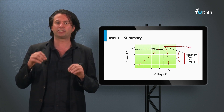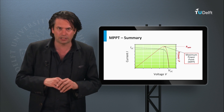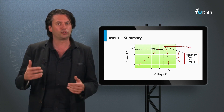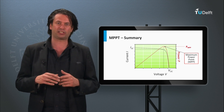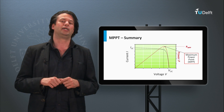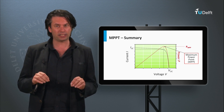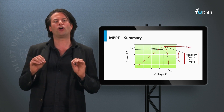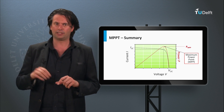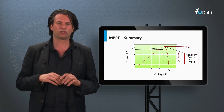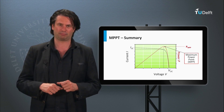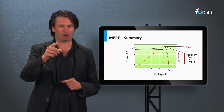The maximum power point tracking device is also expected to respond swiftly and accurately to changes in the ambient conditions that impact the PV output. In the next blocks this week we shall look at the other components of the PV system that make the harnessed intermittent solar energy usable for various applications. See you in the next block!